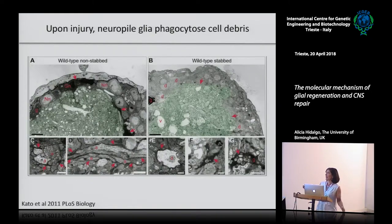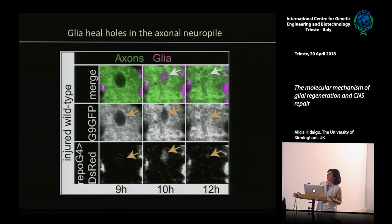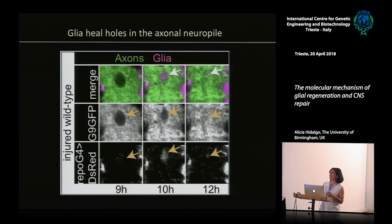These glial projections do two things: they envelop the vacuoles and eventually dissolve them, and they engulf all the cellular debris from the injury - so they become phagocytic. In the time-lapse confocal, we see axons in green and glia in pink with DS red. We see these holes in the neuropil at the beginning of the injury. Then over time, we see them get filled up with glial processes, and eventually the holes disappear. What it means is that the glial cells are enveloping and invading these vacuoles and dissolving them.